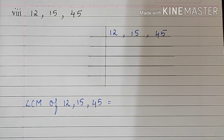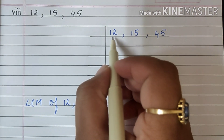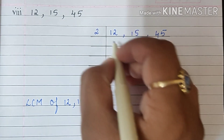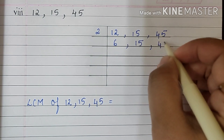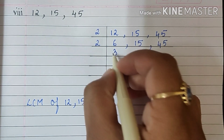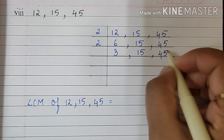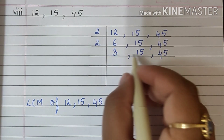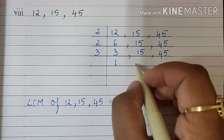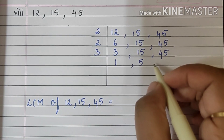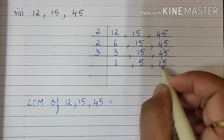Sum number 8 reads 12, 15 and 45. So we will begin with the table of 2 because this is an even number. 2, 6 are 12. 15 will come down as it is and 45 will come here. Now all these numbers are divisible by 3. So we will begin with 3. 3 1s are 3, 3 5s are 15, 3 1s are 3 carry 1, 3 5s are 15.